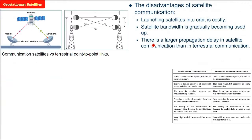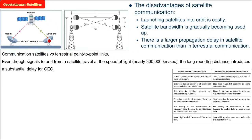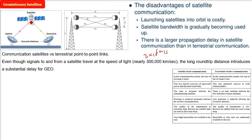Now, the speed of light is 3×10⁸ meters per second — that is 300,000 kilometers per second. Note: this is not 3×10⁶, it is 3×10⁸ meters per second.